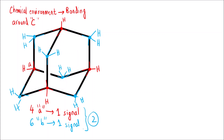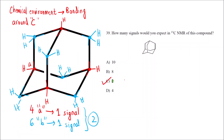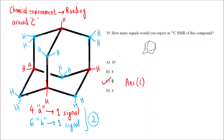So, total there are 2 signals that will be seen. The correct answer is option C, and that is what is given in the answer key as well. If you do not visualize this molecule in a 3D environment and do not look at the bonding, you might think all carbons are different and mark option A, which would be incorrect, or 8, which is also incorrect. The key is to check the chemical environment around the atoms — whether it is 13C NMR or 1H NMR, the technique remains the same.